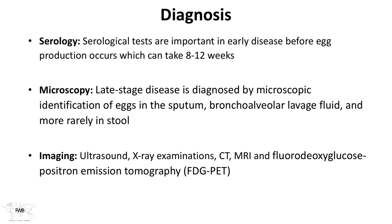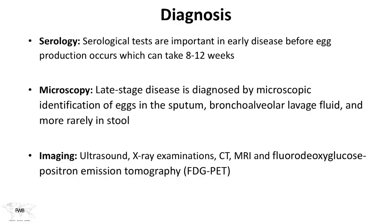Serological tests are important in early disease before egg production — a window of 8 to 12 weeks. Once we reach late-stage disease, we can look for eggs in sputum by microscopic evaluation — an O&P on sputum, bronchoalveolar lavage fluid, and more rarely in the stool. It's important to alert the lab to what you're looking for, because if a tuberculosis smear is prepared instead, it might destroy the eggs. Work with your lab when pursuing this diagnosis.